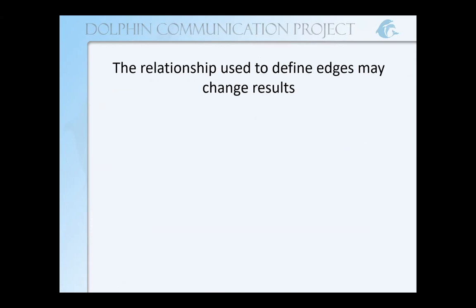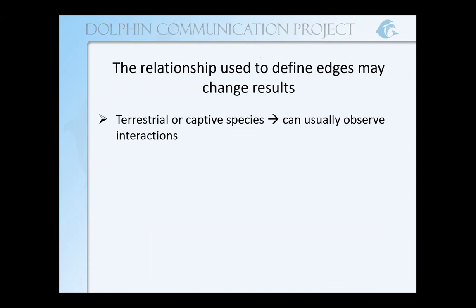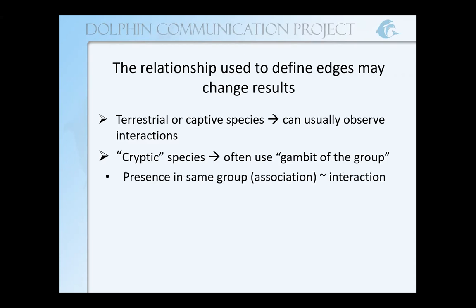We can also use different relationships to define our edges, but using different relationships may change our results. In terrestrial or captive species, we can usually directly observe our interactions, whereas in cryptic species — meaning species that don't come out in the open very often, maybe nocturnal, or that live their whole lives underwater like dolphins — we use what is called the gambit of the group. In this hypothesis, presence in the same group or association is a proxy for interaction. We're assuming that individuals who are together are going to interact in some way.